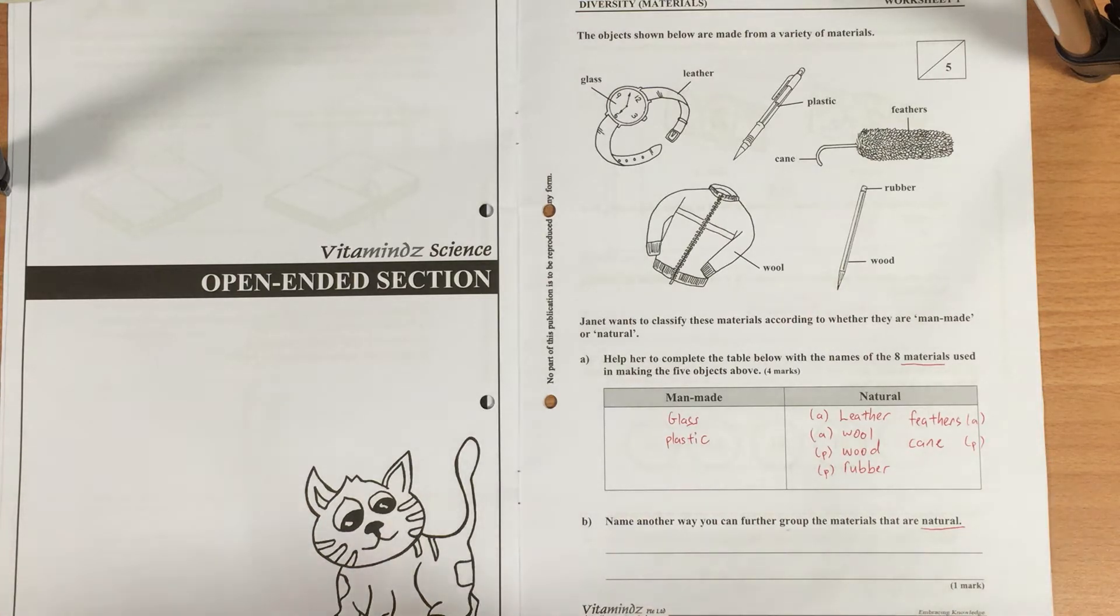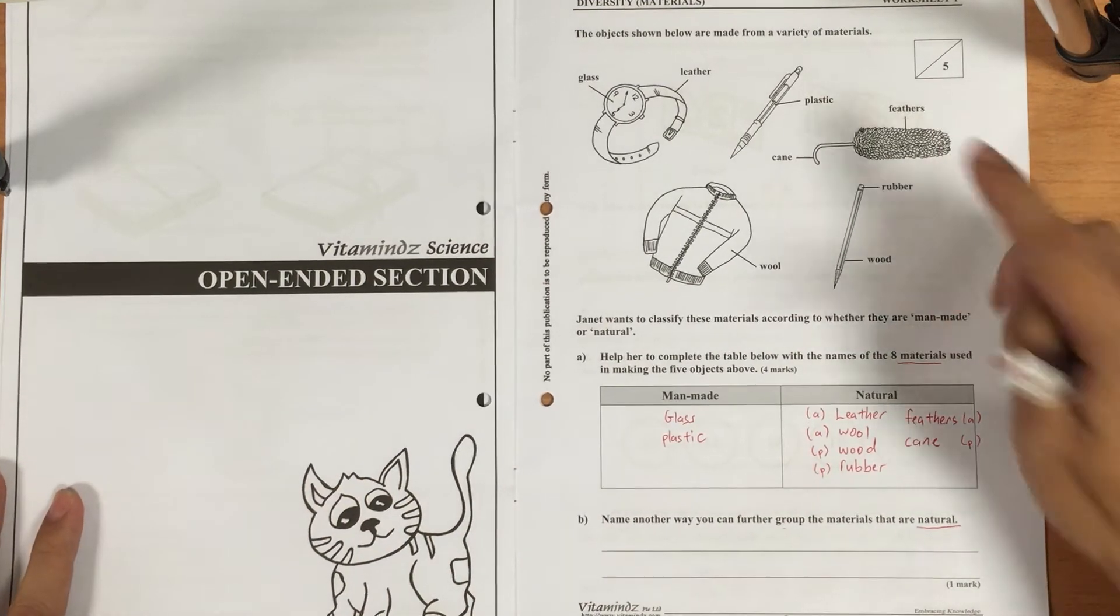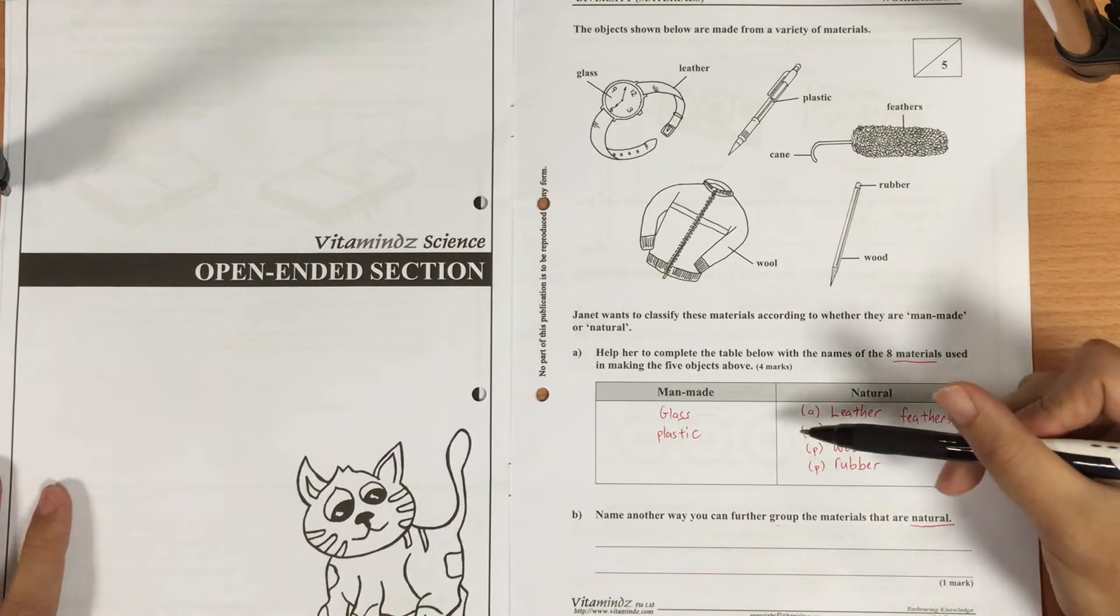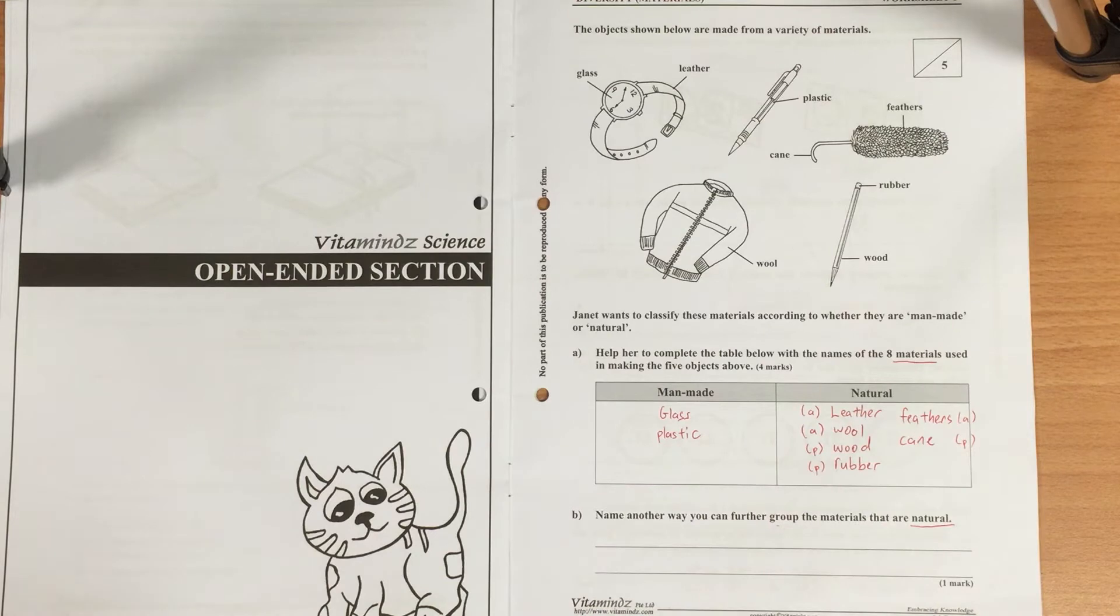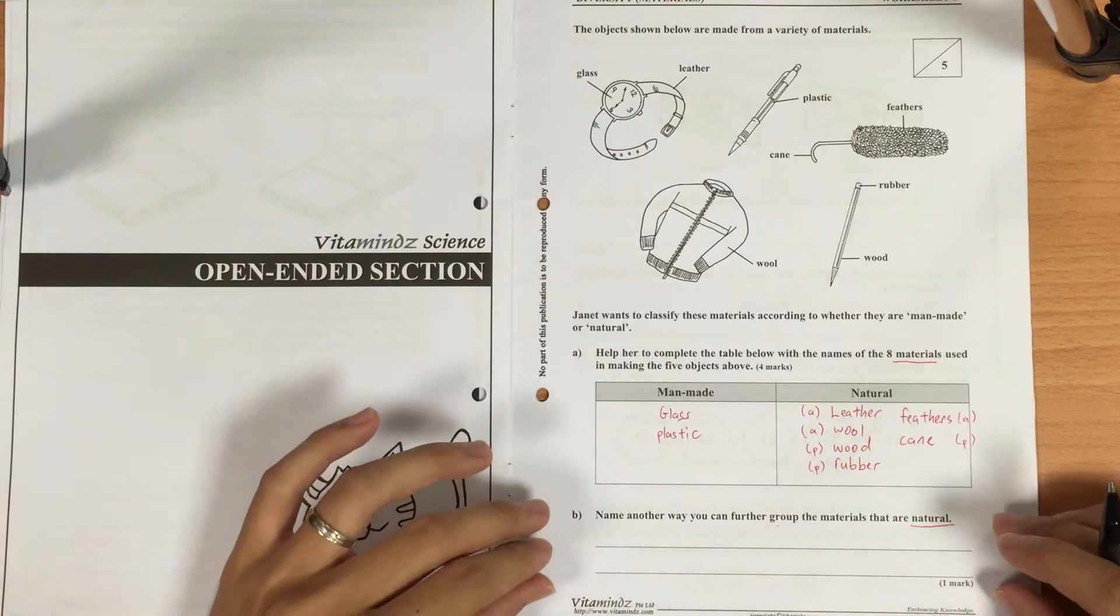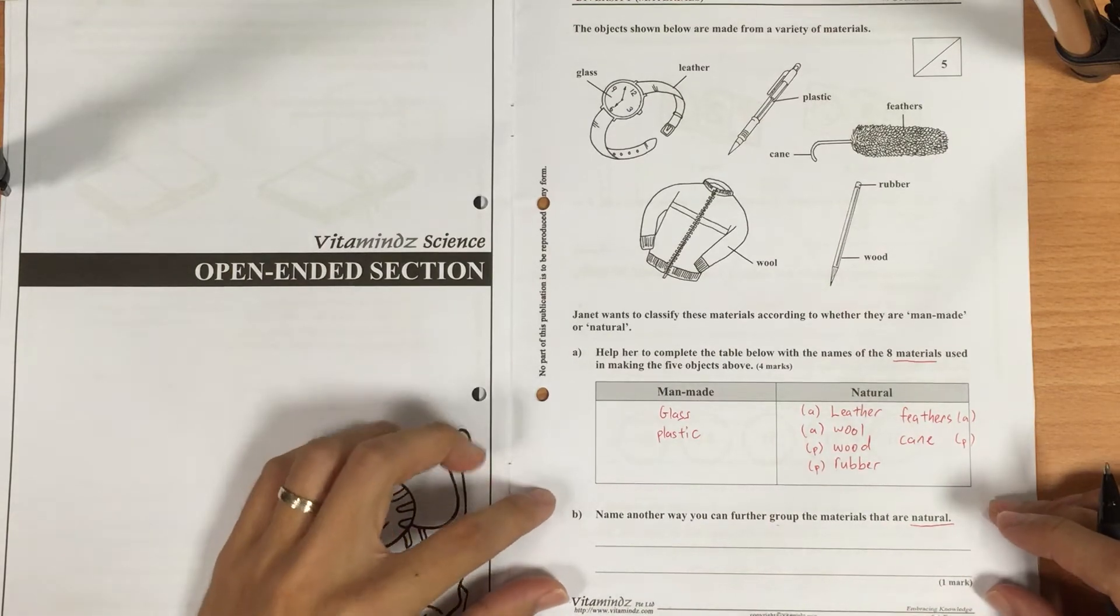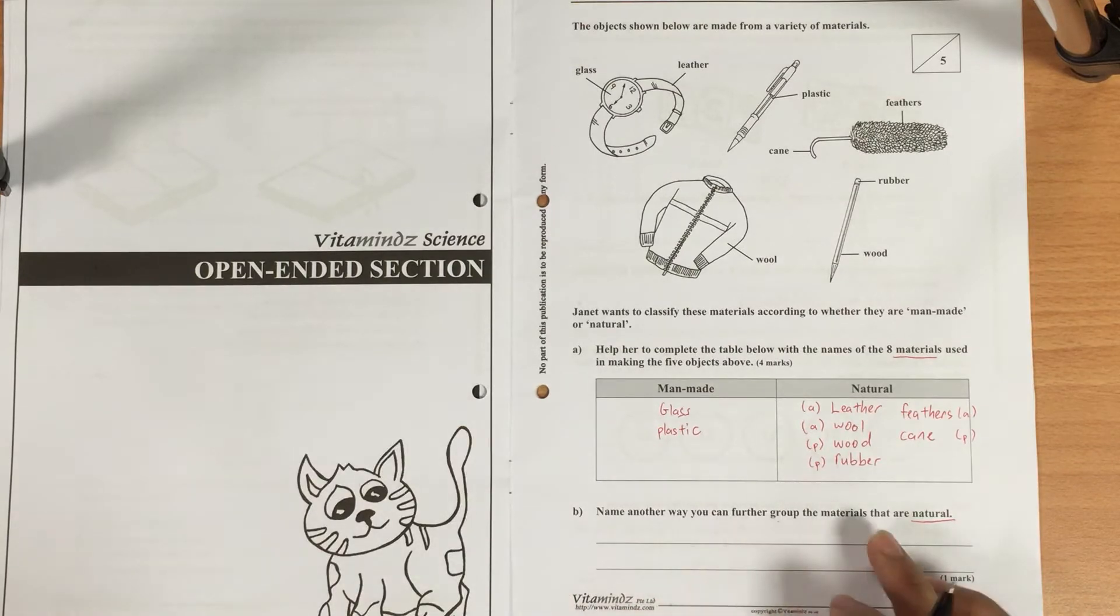Some of the common errors that I've noticed when I was marking your work. On this first question, worksheet one, most of you are able to classify the man-made objects as well as the natural objects.